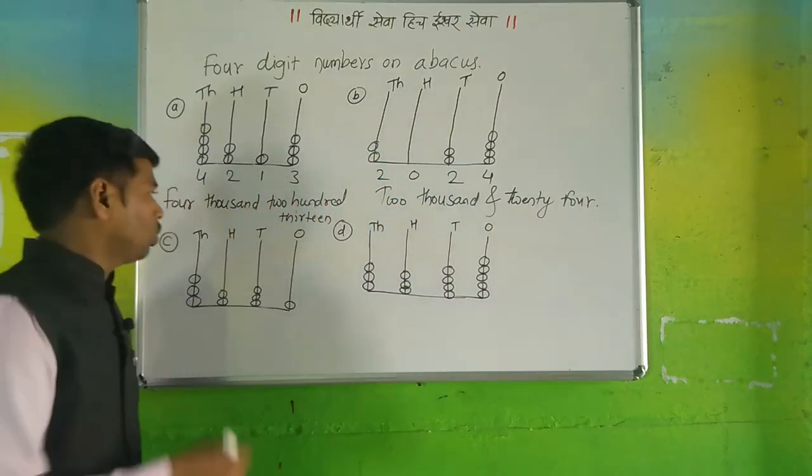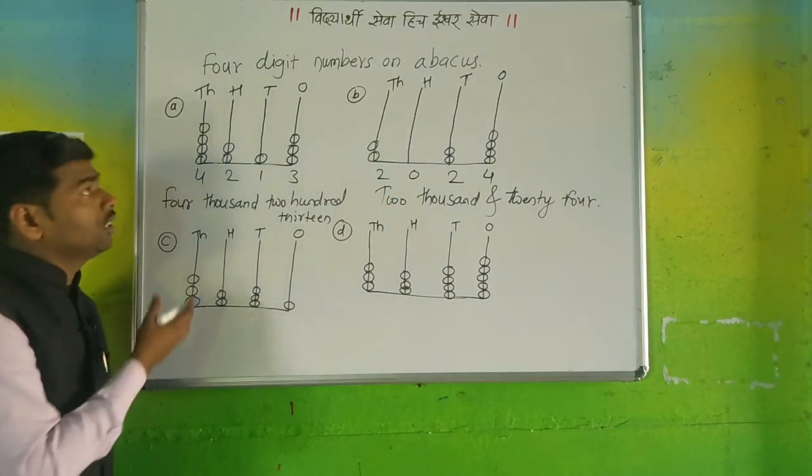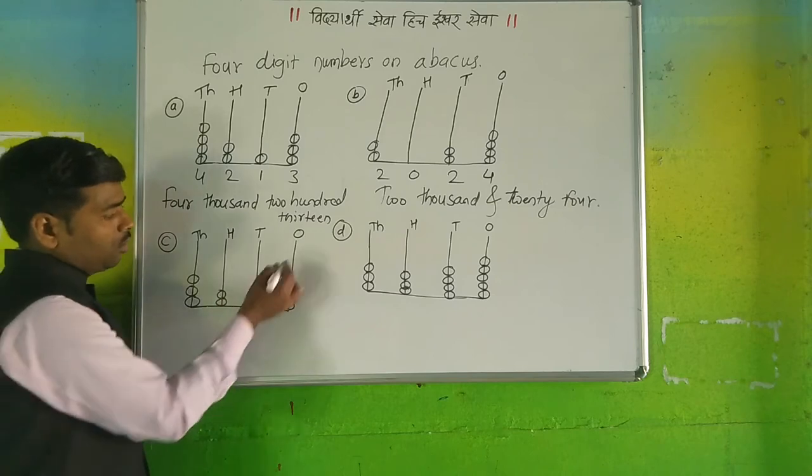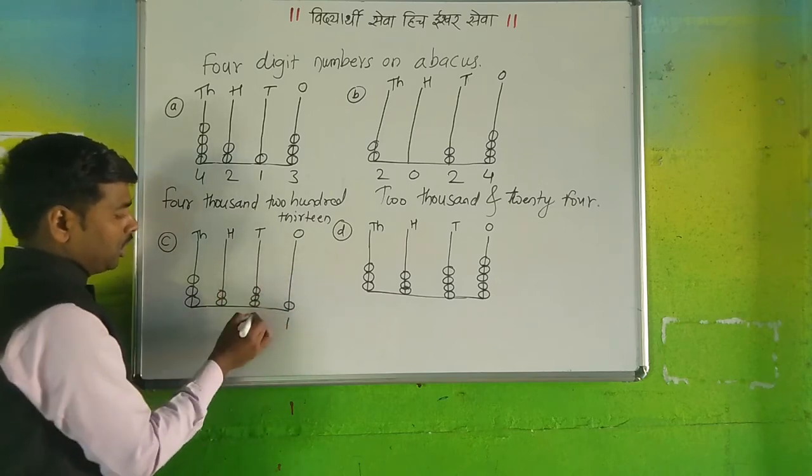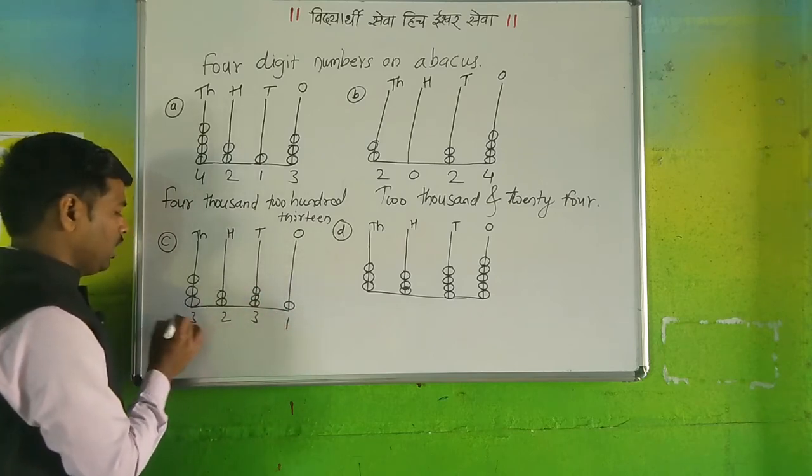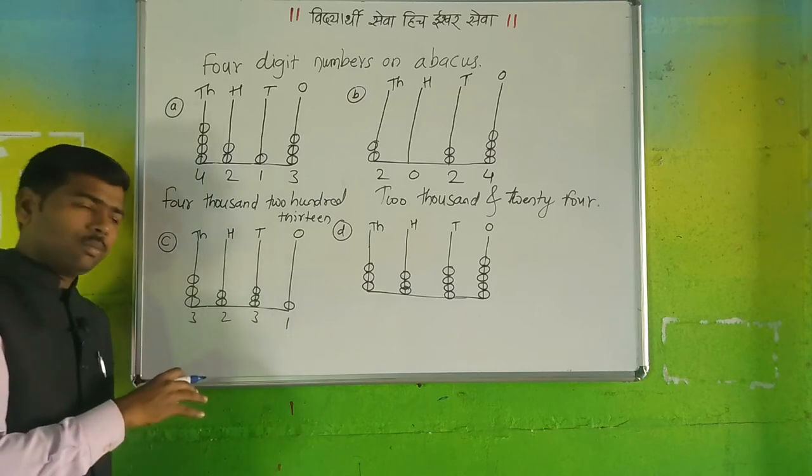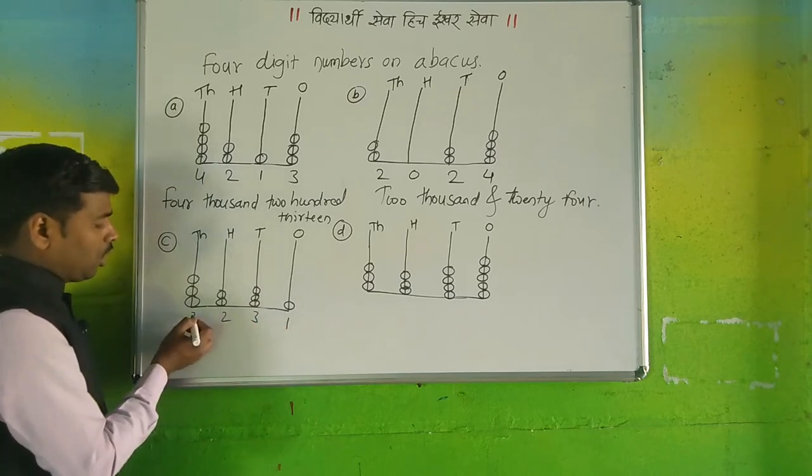Now the third example of this abacus. Here is given one, here is three, here is two, and here is three. How can you write this? It is so simple. One hundred, thousand. Three thousand, three thousand, three thousand, and then two thirty-one. Are you getting me? Now this fourth is for you.